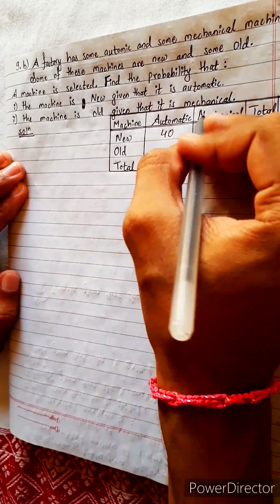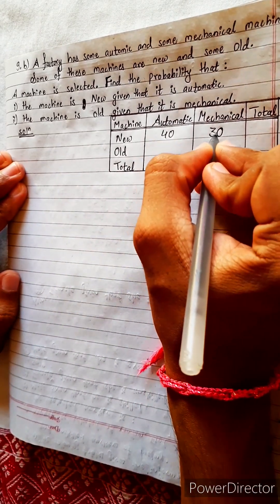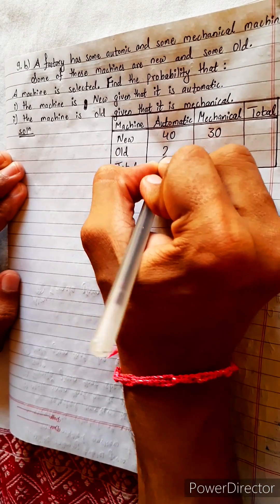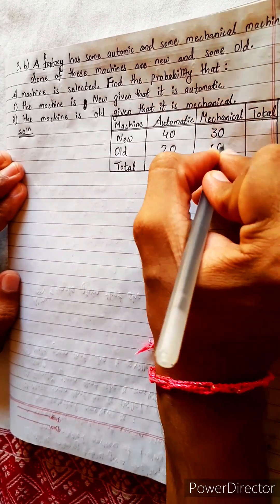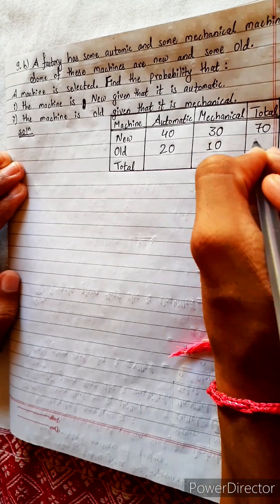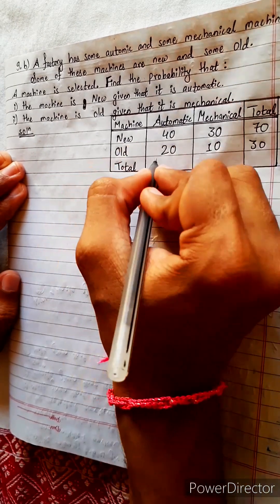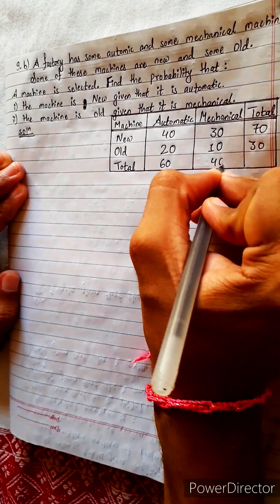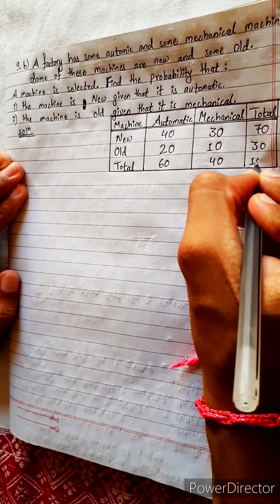Your question: 40 automatic, 30 mechanical, new mechanical; new automatic 40, new mechanical 30, old automatic 20, old mechanical 10. Total new 70, total old 30, total automatic 60, total mechanical 40, and total everything 100.